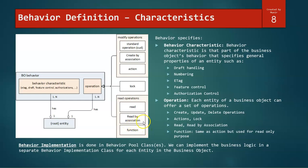Functions are similar to read by associations but only for the read functionality. You cannot have the create, update, and delete functionality there. Now, behavior implementations, as we have seen in the last slide, can be done in behavior pool classes. And we can have a separate implementation class or we can have one single implementation class that caters to all the entities in the behavior definition.